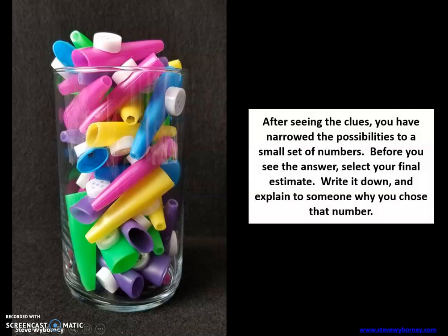After seeing the clues, you have narrowed the possibilities to a small set of numbers. Before you see the answer, select your final estimate. Write it down and explain to someone why you chose that number. Think about what's the most reasonable for the number of kazoos in that vase. And before you move on to the answer, I want you to pause the video and share your answer with your teacher.